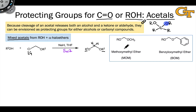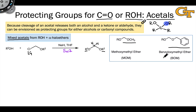Here we see two common examples of mixed acetals used as protecting groups for alcohols: the methoxymethyl ether or MOM group, which encompasses the CH2 and the OCH3 group, and the benzyloxymethyl ether or BOM group, which encompasses the CH2 and the OCH2-phenyl group. You'll see things like O-MOM or O-BOM, where O-MOM is shorthand for a methyl acetal and O-BOM for a benzyl acetal.